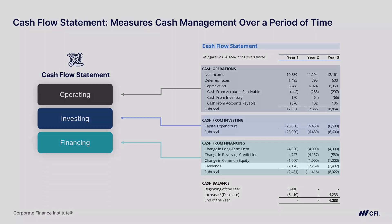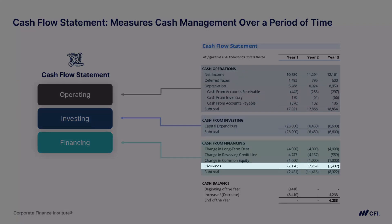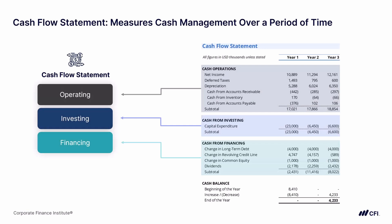We're also seeing a line for dividends, where there are cash outflows paid to shareholders. To summarize the three sections, the cash flow statement has a summary at the bottom showing the cash balance at the beginning of the year, the changes through the period shown as an increase or decrease, and the cash balance at the end of the year. Cash outflows are always shown as negative numbers and cash inflows as positive numbers. Just like the income statement, we see results over year one, year two, and year three.